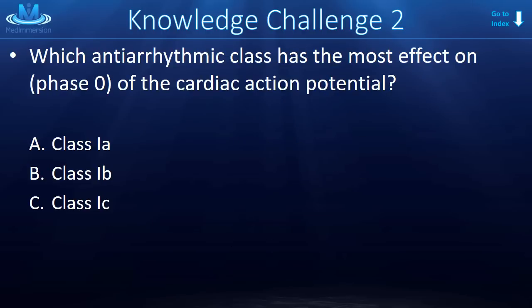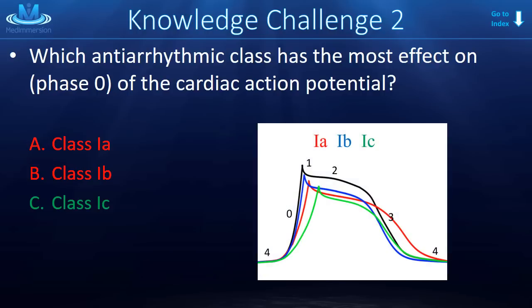Knowledge challenge number 2: which antiarrhythmic class has the most effect on phase 0 of the cardiac action potential? The answer is class 1C. Remember how the changes in the cardiac action potential with the class 1 drugs were overlaid — instead of thinking A, B, C, think B, A, C, because that's how the curves move away from normal unaffected physiology. Class 1C has the strongest effect on that initial fast sodium influx.